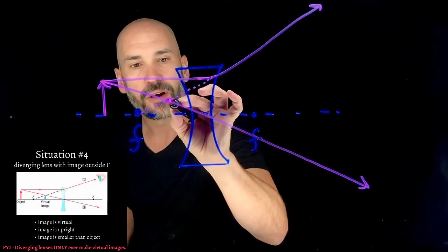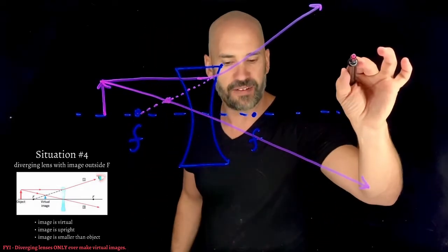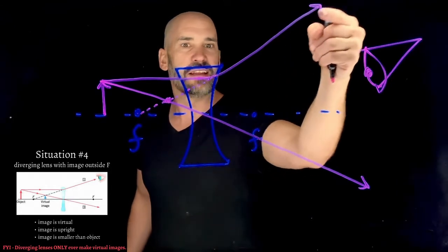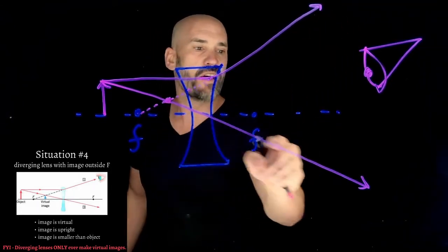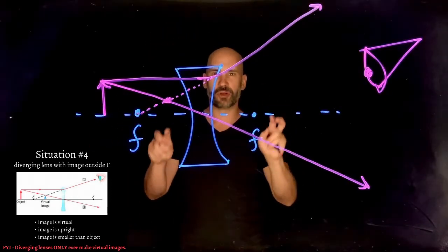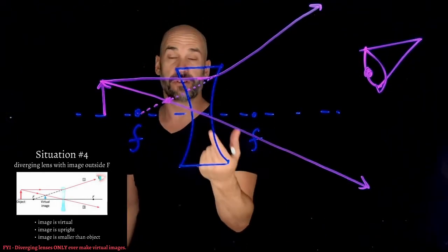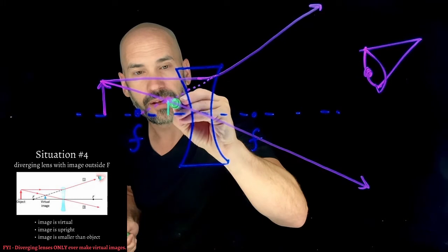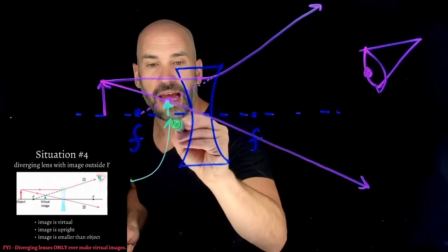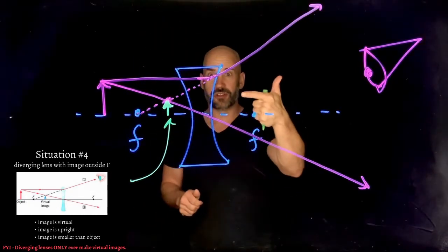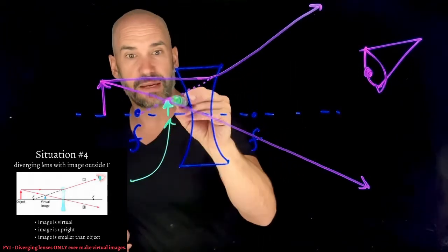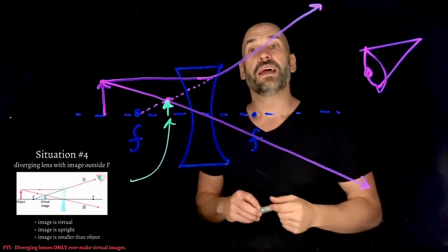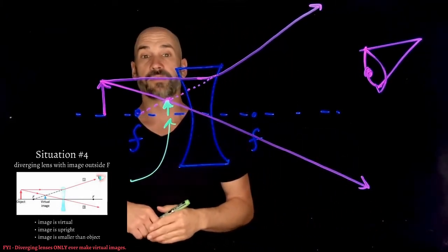The second special ray goes directly through the center — it's not impeded by going through the center. These two rays meet here. If an eye is over here looking at this light, it sees one ray as if coming from a position and another actually coming through. Since I have to trace a ray back, this is a virtual image.